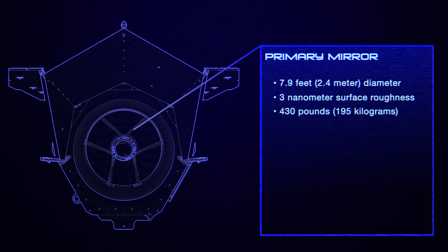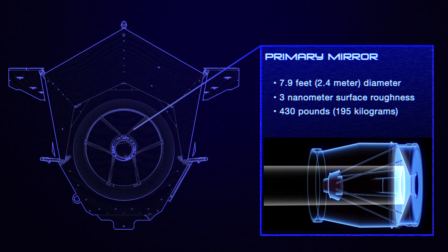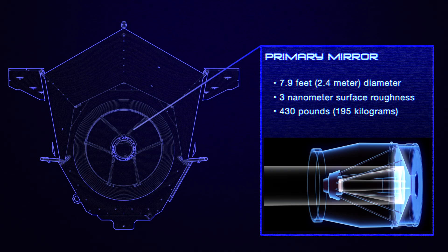This is where Roman is closest to Hubble. It has the same size and type of main mirror, a 2.4-meter precisely shaped piece of silver-coated glass. The size of this mirror is partly how Roman matches Hubble's resolution.